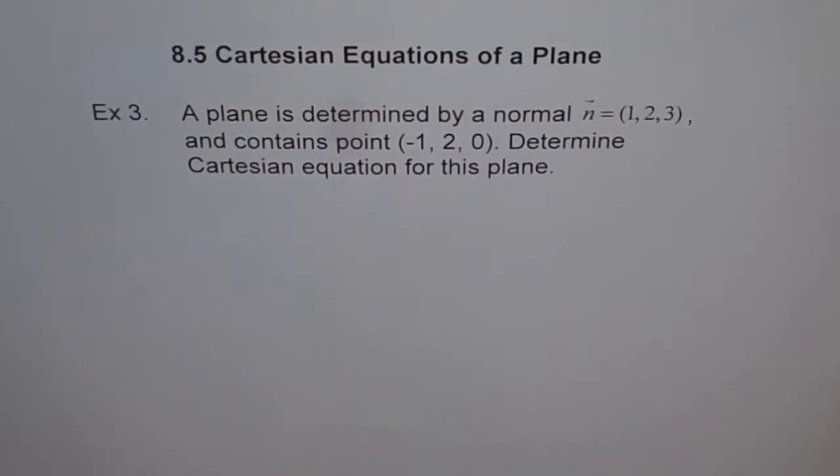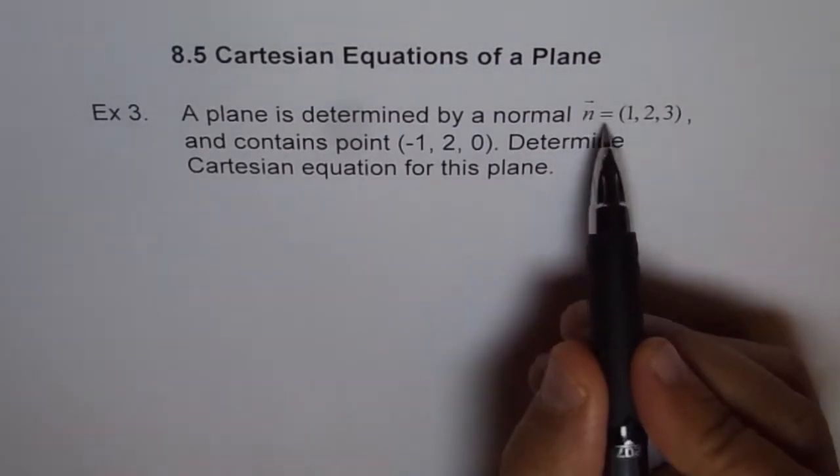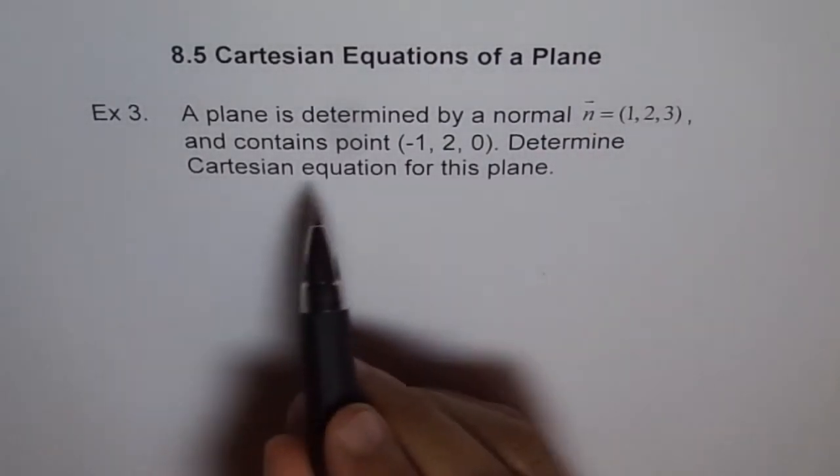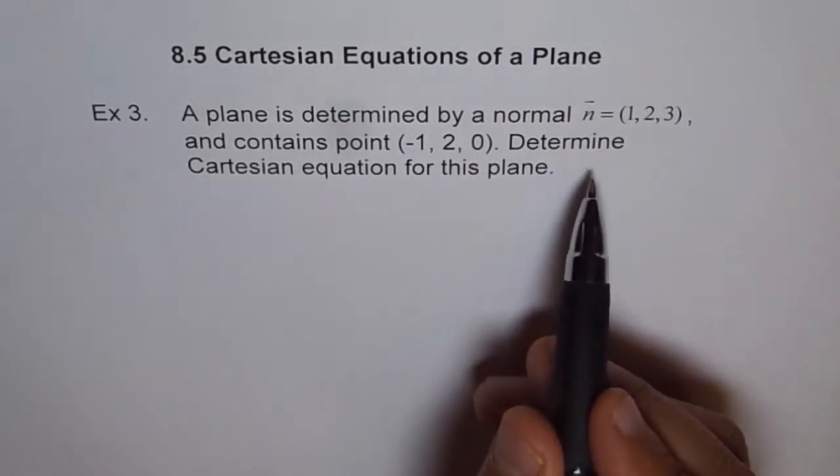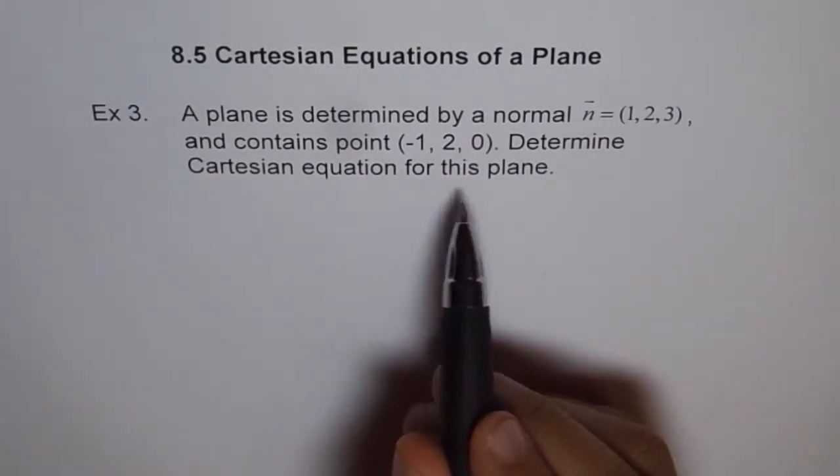Cartesian equations of a plane, example 3. A plane is determined by a normal n equals (1, 2, 3) and contains point (-1, 2, 0). Determine Cartesian equation for this plane.